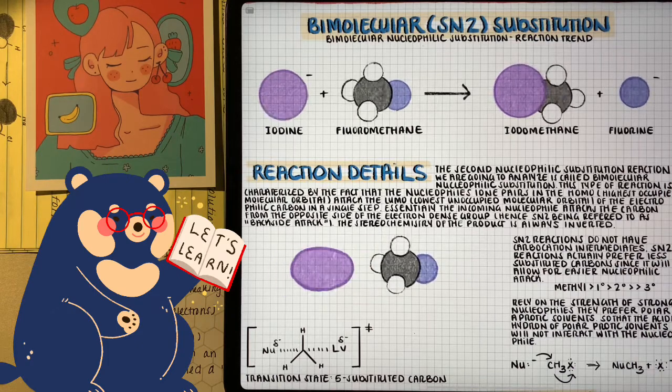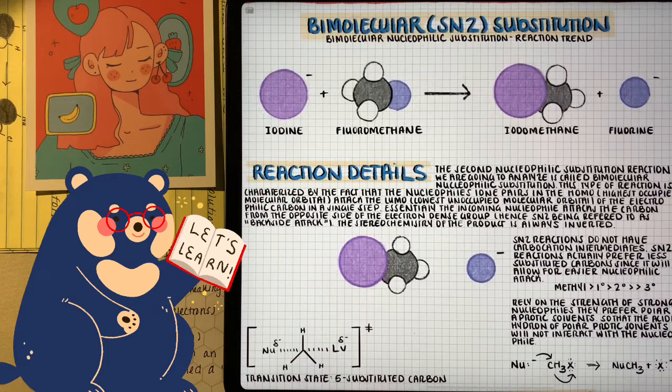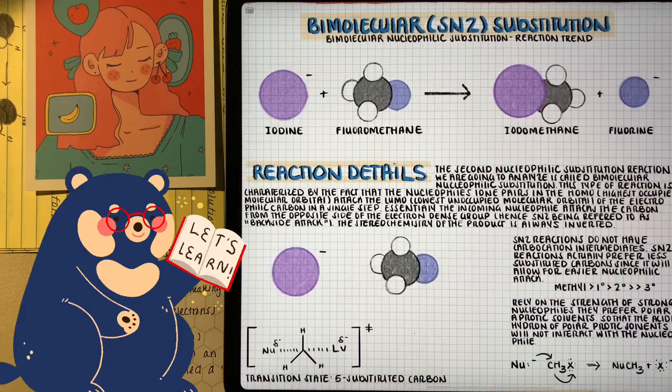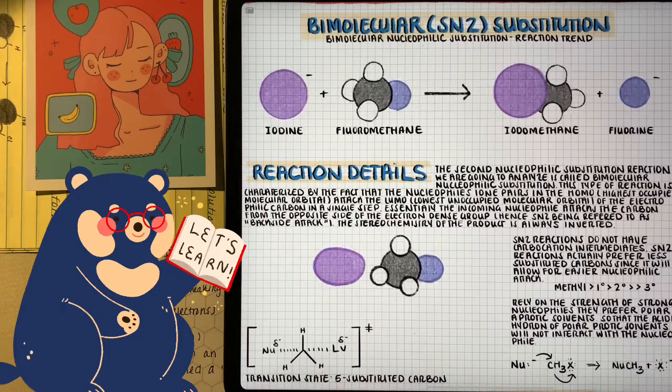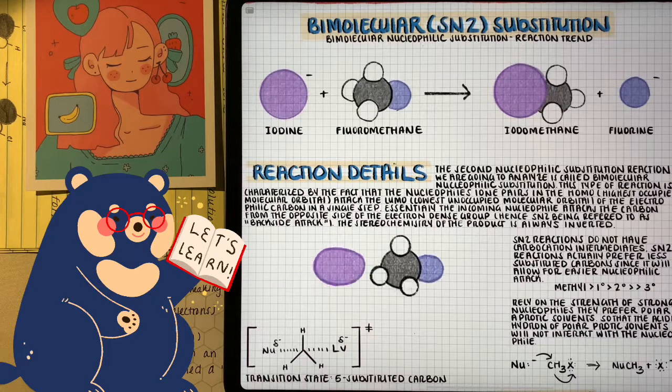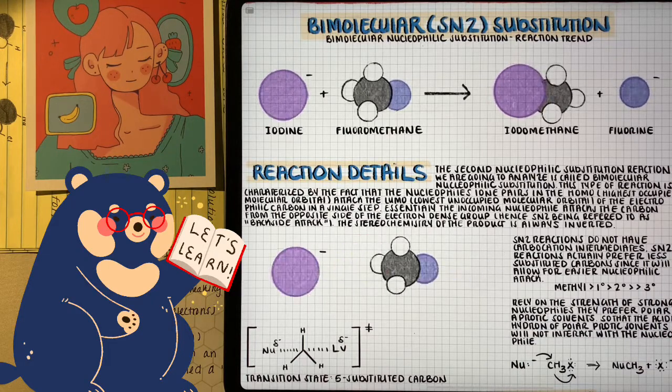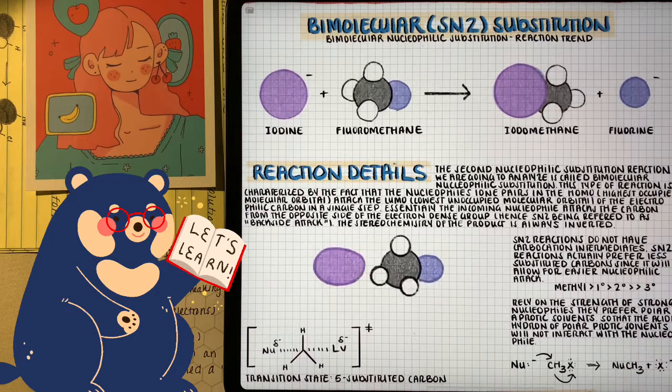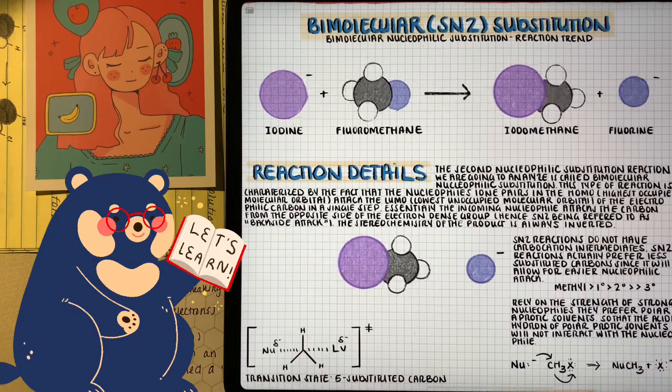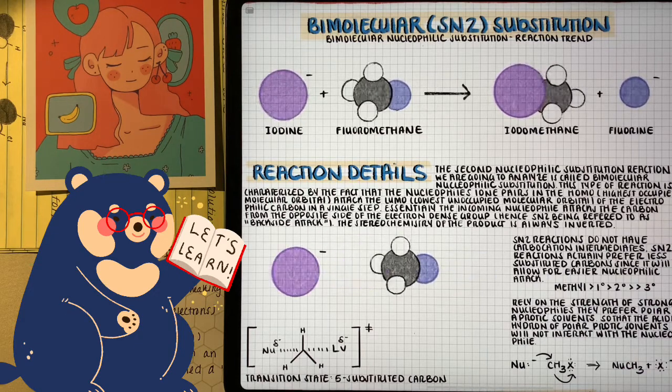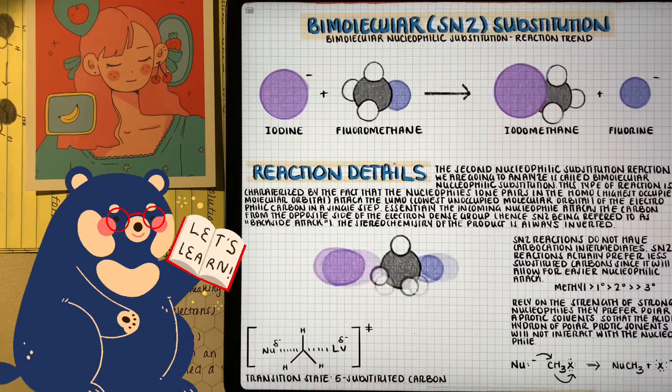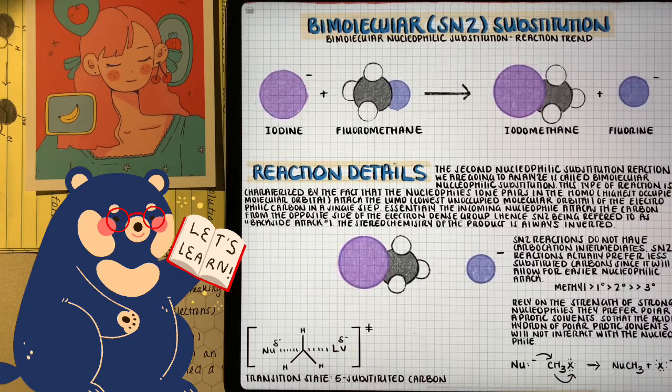In this case, it's kind of flipped. We don't want a substituted carbon. The more substituted the carbon is, the harder it is for the nucleophile to attack the electrophilic carbon because of steric hindrance. So because of this, SN2 reactions favor unsubstituted carbons such as methyl and primary, and sometimes secondary, but definitely not tertiary.